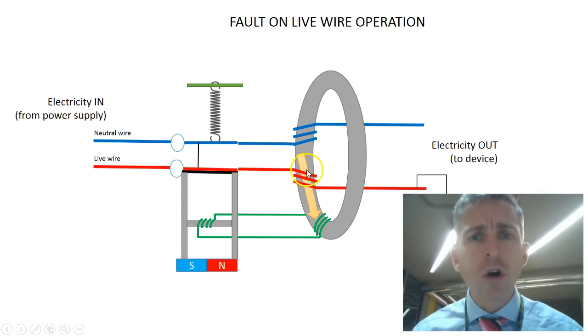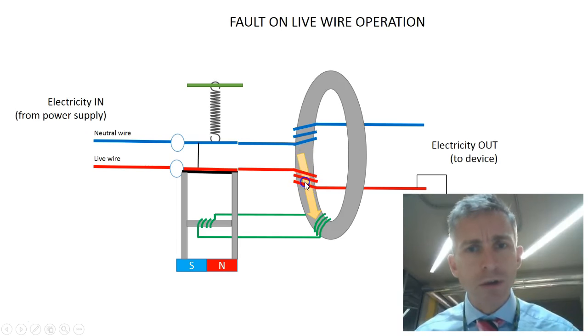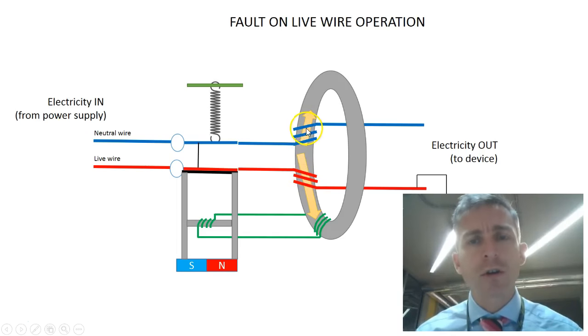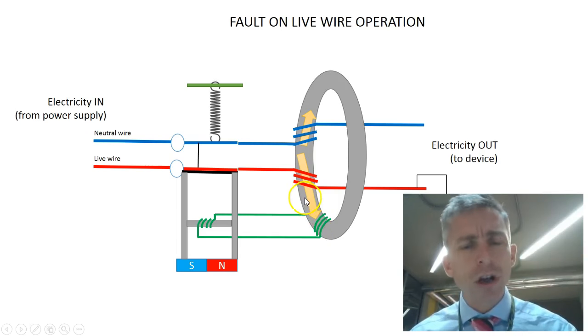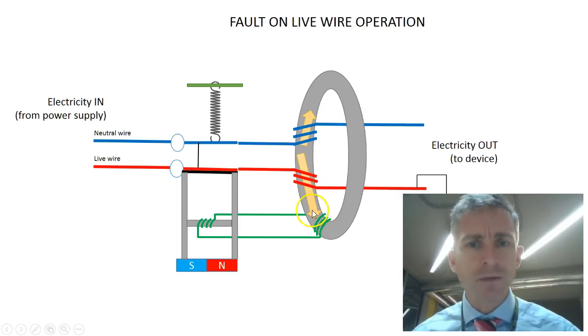However, if there is something wrong, then the current supplied is greater than the current that returns. And that means that there is a greater magnetic field here than here. And so you end up with a net magnetic field. A net magnetic field will produce a voltage across this coil. And it does so because these are actually alternating currents. And the changing magnetic field induces a changing alternating current inside this coil.